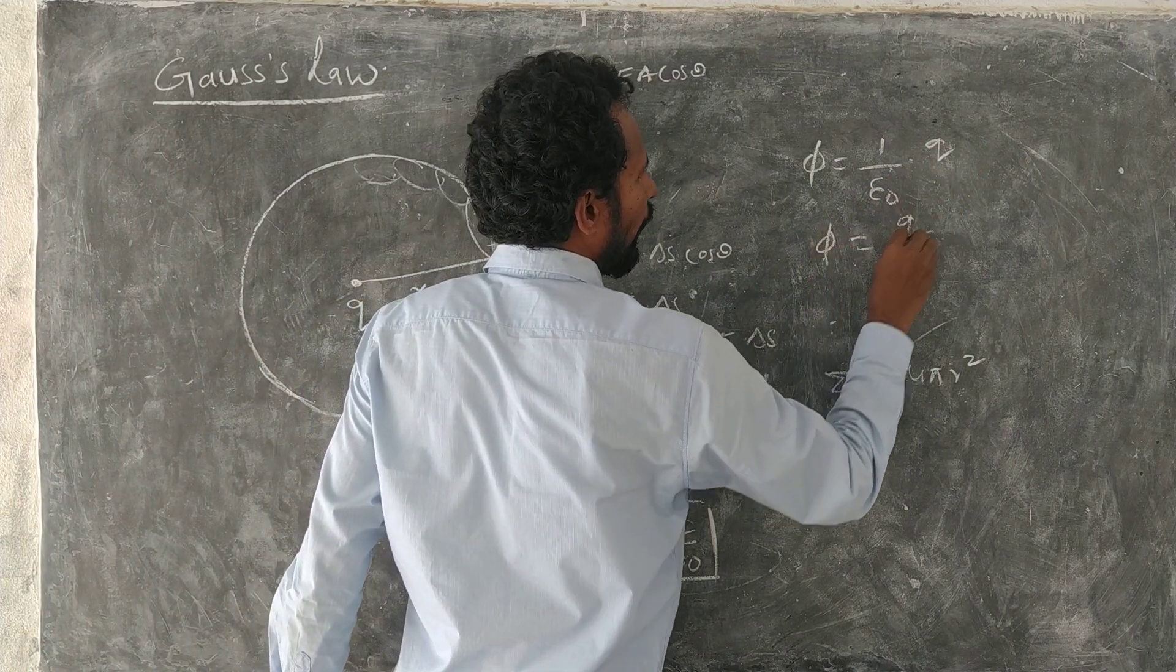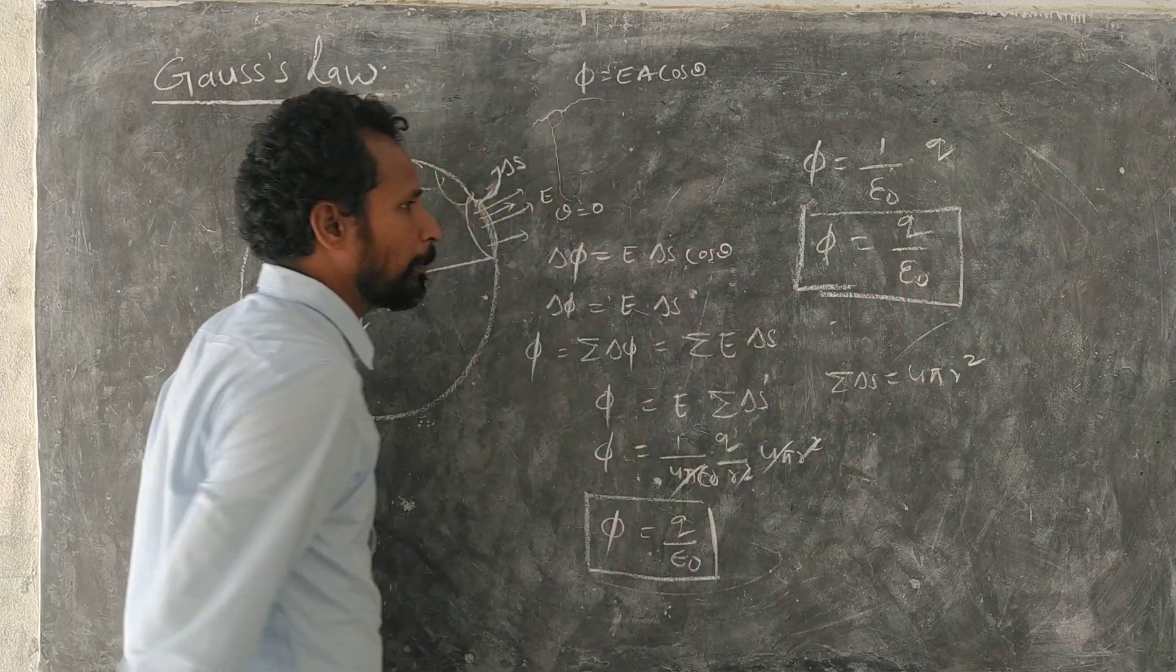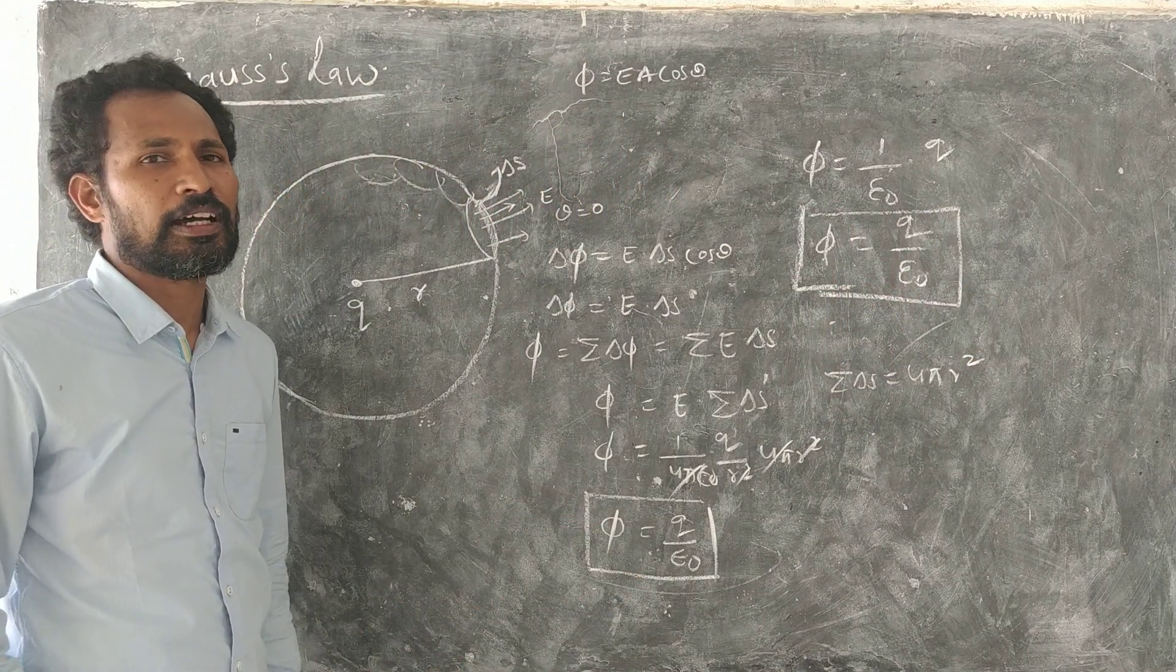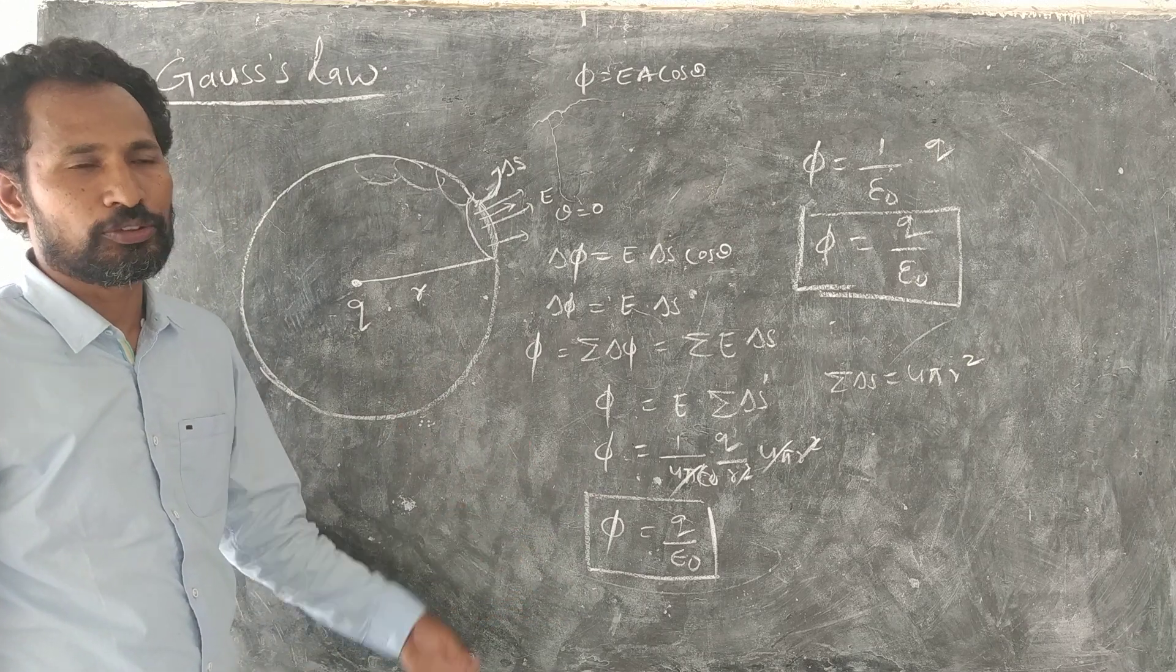So this phi is equal to q by epsilon naught. Epsilon naught is what? Permittivity of free space, already we have seen in beginning videos.